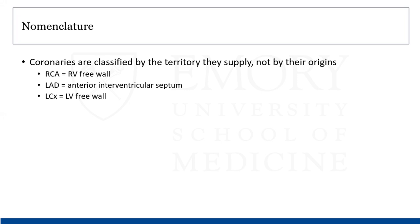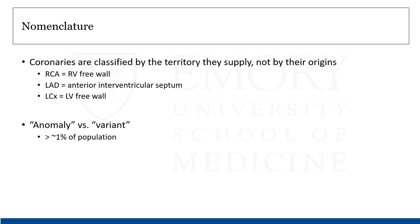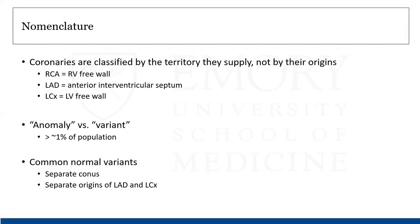On nomenclature: coronaries are named based on the area they supply downstream of the origin — the right coronary supplies the RV free wall, the LAD supplies the anterior septum, and the left circumflex supplies the LV free wall. There is a dividing line between an anomaly and a variant, semi-formally agreed upon at the 1% prevalence rate. Above 1% is considered a variant; below 1% is anomalous. The most common normal variants are a separate conus and a separate LAD and left circumflex, which are clinically relatively inconsequential.